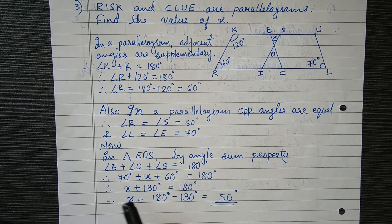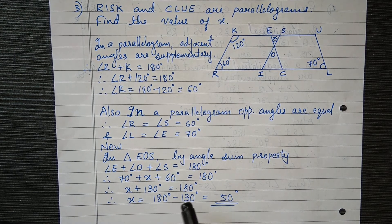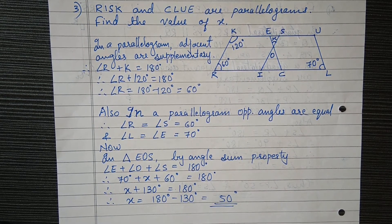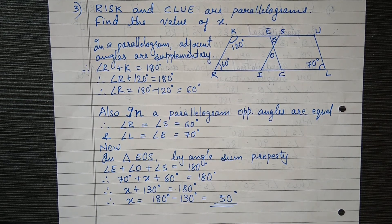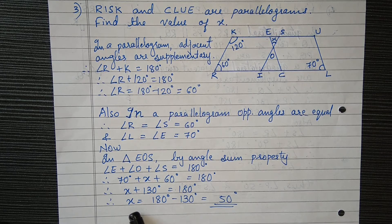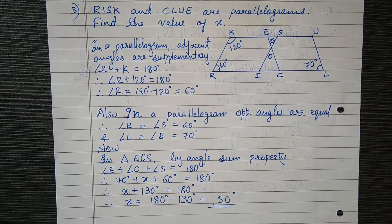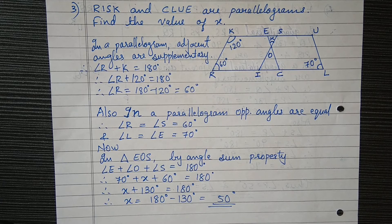So X plus 130 equals 180 degrees. If we change the side of 130, we will get the value of X. So X will be 180 minus 130, which is 50 degrees.